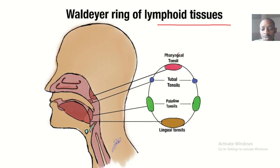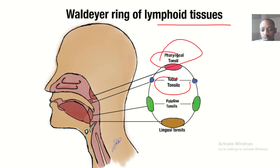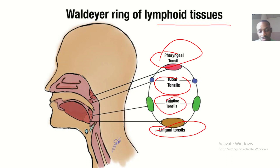And you can see the components of the Waldeyer's ring. We have the pharyngeal tonsils, we have the tubal tonsils, we have the palatine tonsils, and we have the lingual tonsils.